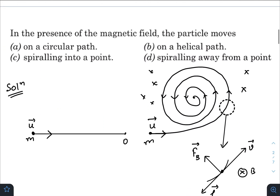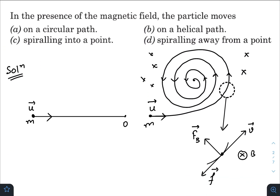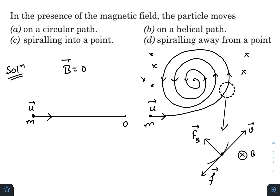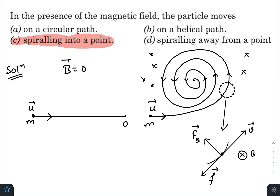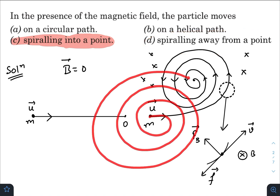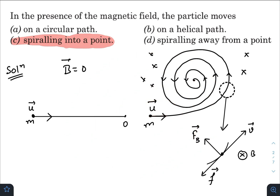Now let us discuss the first question: in the presence of a magnetic field, the particle moves on which kind of path? Initially, with zero magnetic field, it travels 10 meters in a straight line then stops. But in the presence of a perpendicular magnetic field, it performs a spiral path and converges to a single point. So the final answer is: spiraling into a given point. Spiraling away from a point would mean increasing radius, which would contradict the scenario.